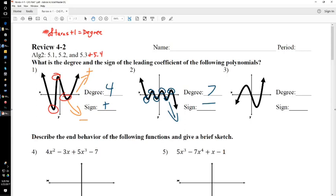Number 3, last but not least, we have 1, 2 turns in this. So the degree has to be at least 3, and it's going up and to the right. So the sign is positive.